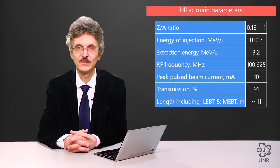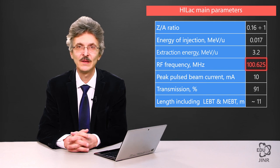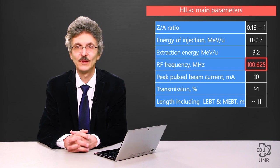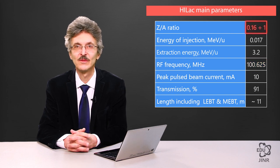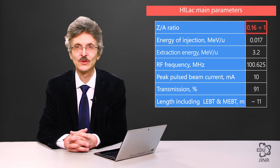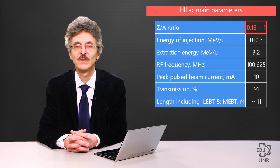Speaking about the parameters of this accelerator, the RF frequency is around 100 MHz. It is slightly lower than the value usually used by proton accelerators. The minimum charge-to-mass ratio that the accelerator is capable of accelerating is 1 over 6, which corresponds to the 31st charged state of a gold ion.